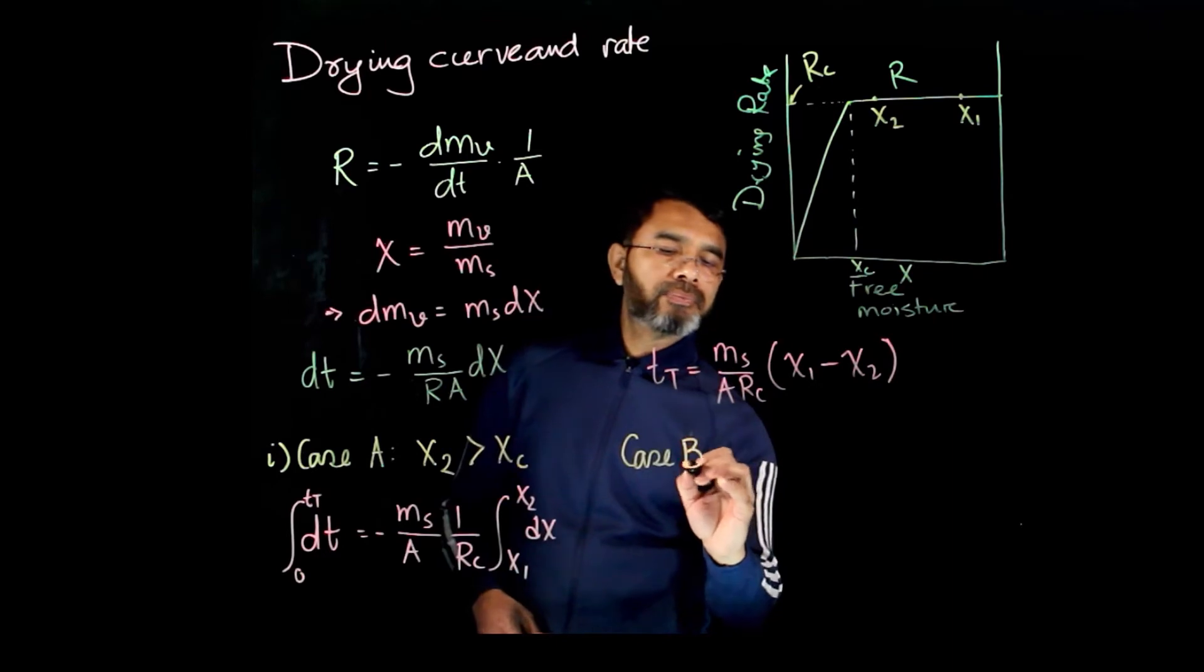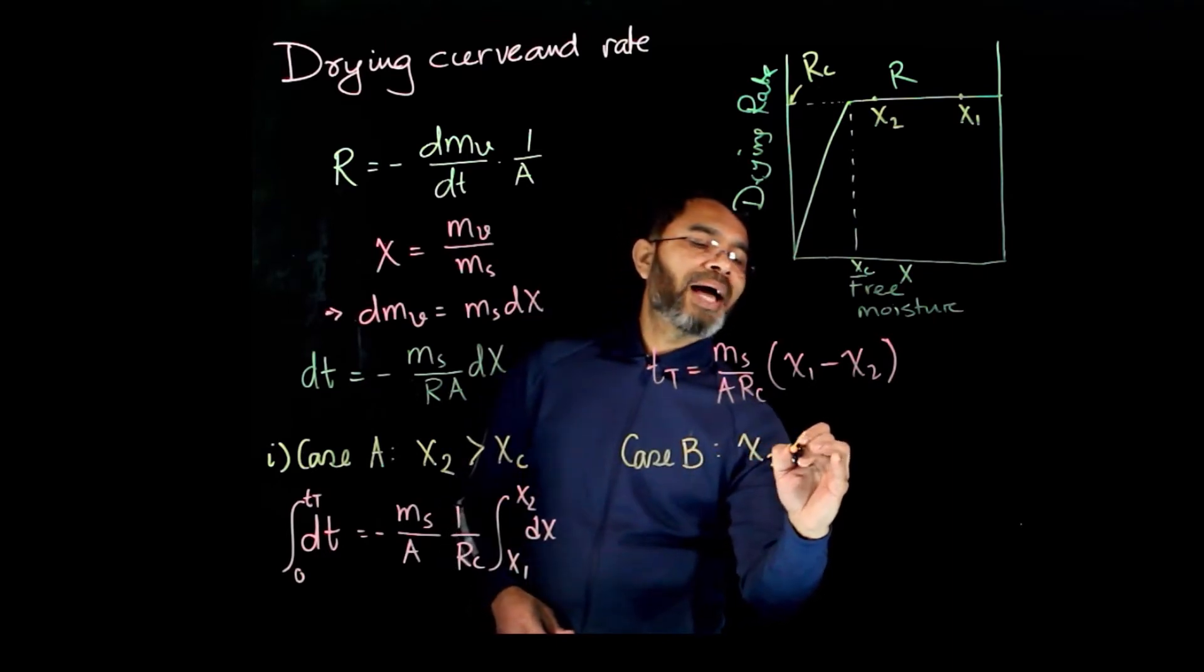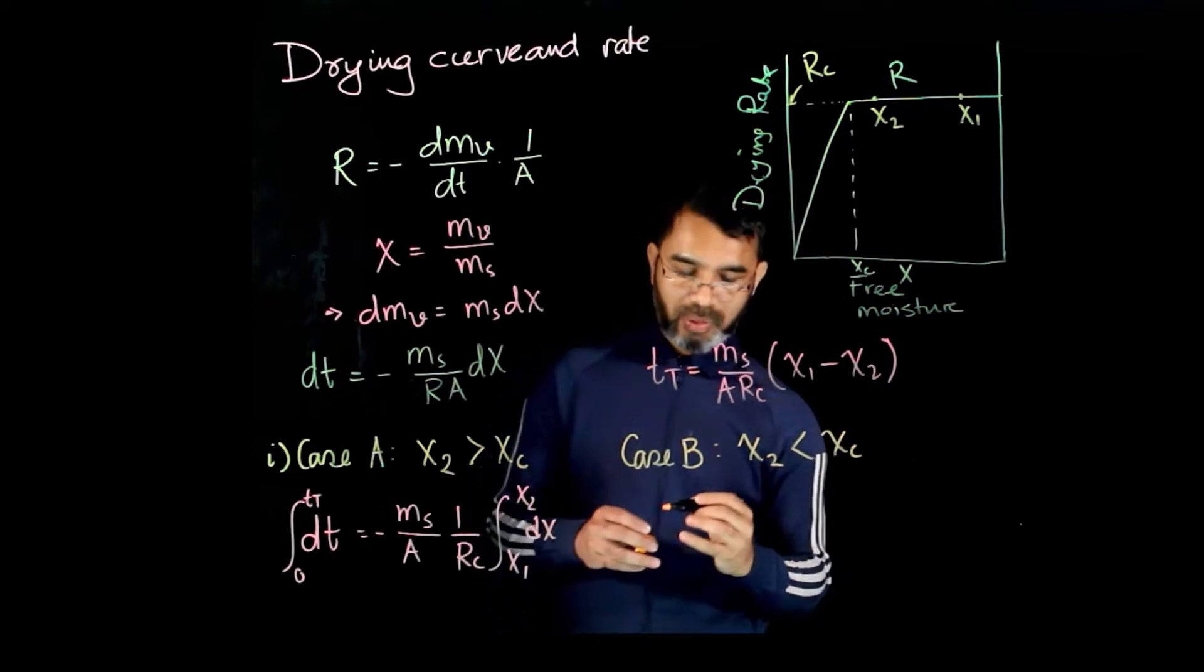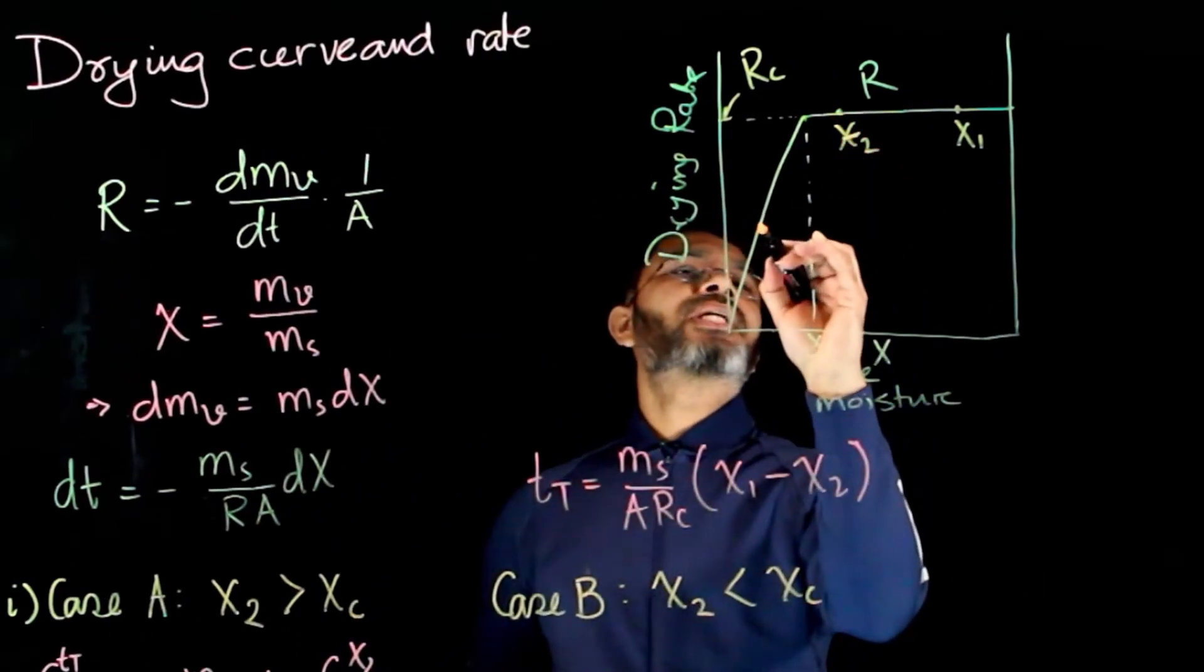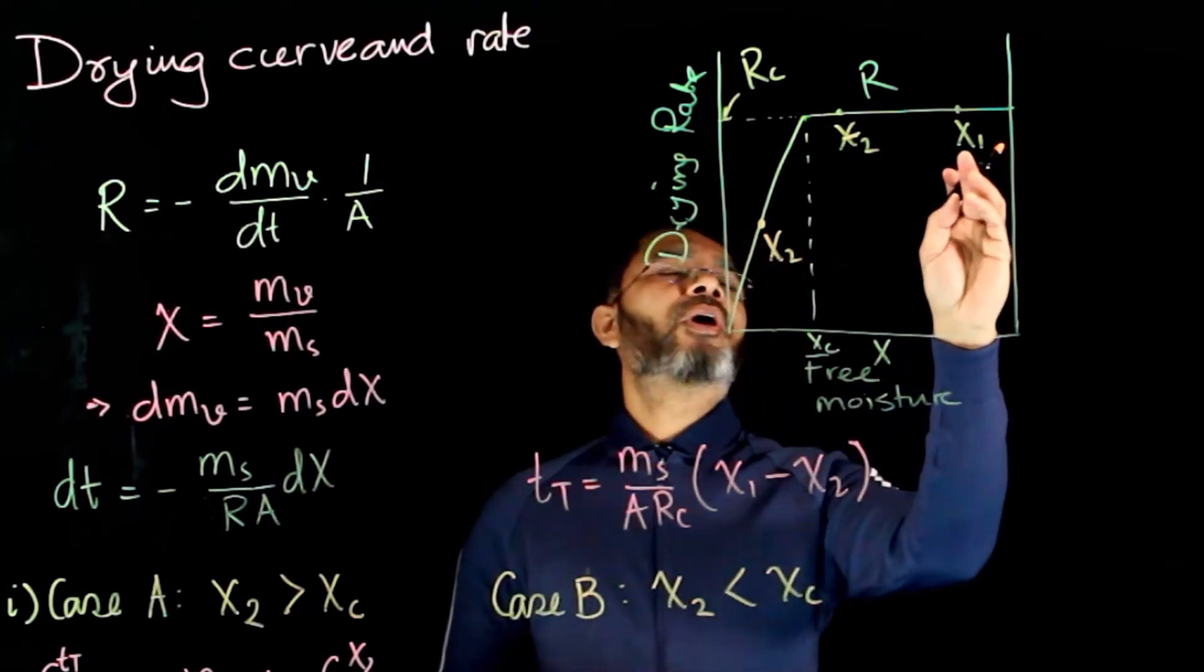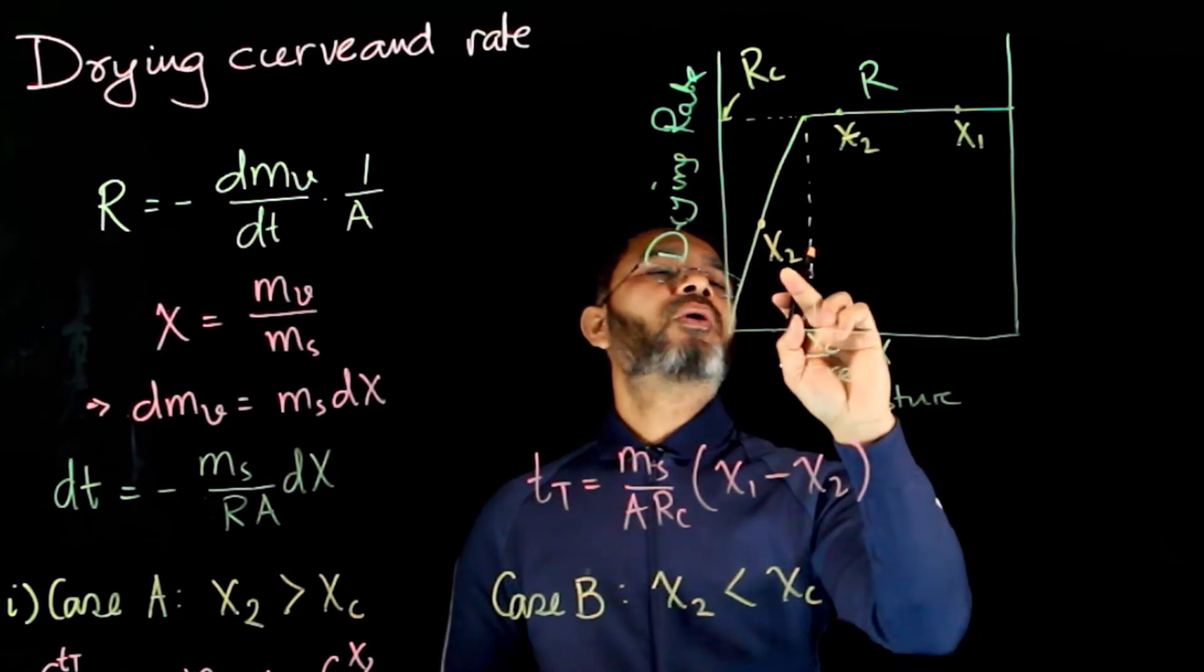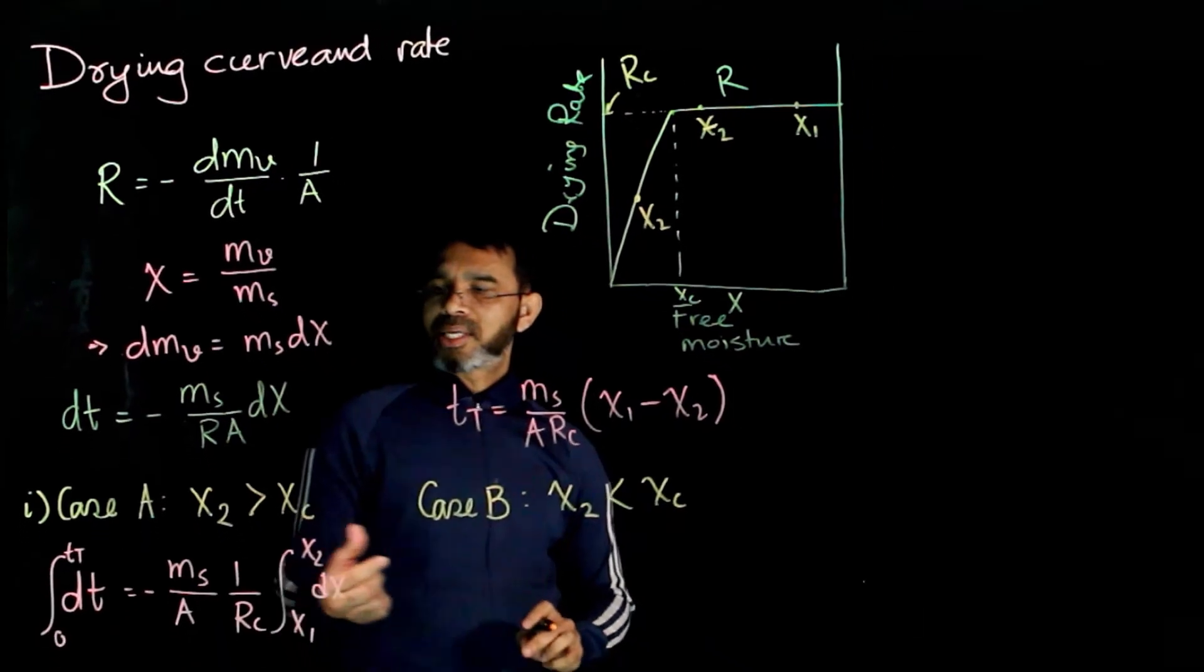Now, for case B, we'll consider x2 some value less than xc. So instead of x2 some value here, if we consider some value x2 to be here, we're going to reduce the moisture content from x1 to x2, where x2 is below this critical moisture content. So in this case, if you want to integrate this equation...